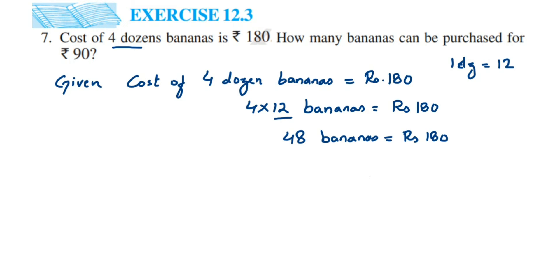They're asking how many bananas we can purchase for 90 rupees. To find this, we have to know the cost of one banana. Here you can see there's an equation forming: 48 bananas equals 180 rupees. We have to find out the price of one banana.